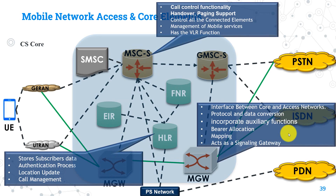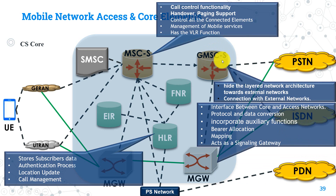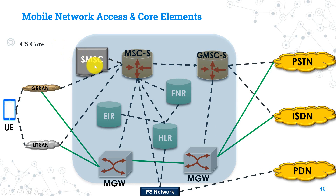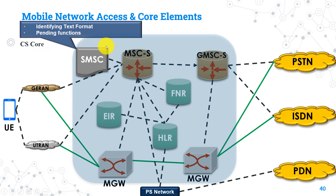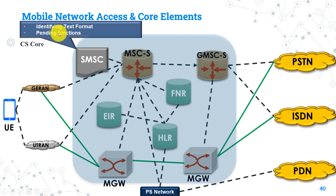Then we have the GMSC, Gateway MSC. It is the same node as an MSC but mainly configured to interface with external networks — no connection with external networks can be done without its permission. GMSC hides the internal network architecture from external networks. We also have the SMS Center, which is the network node responsible for sending and receiving SMS messages between network users. It identifies text format before sending an SMS, and provides a pending function — storing SMSs until resources are available — since voice calls have priority over SMS resource allocation.